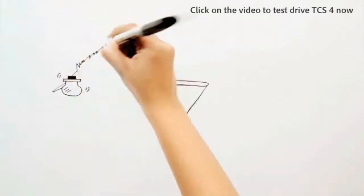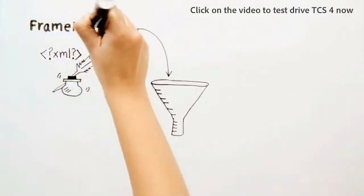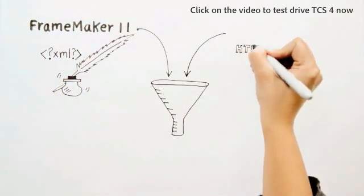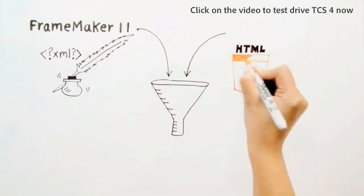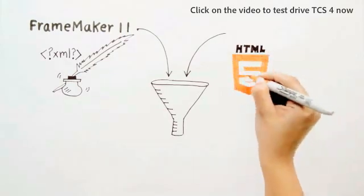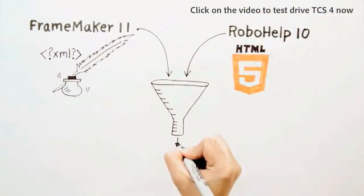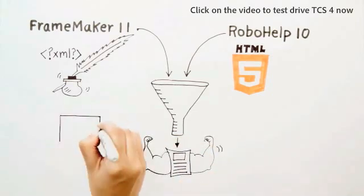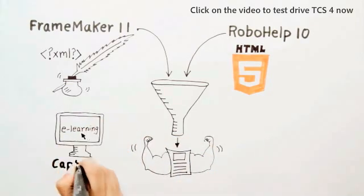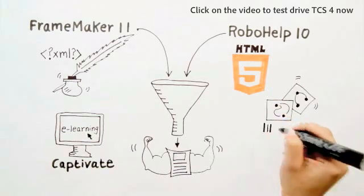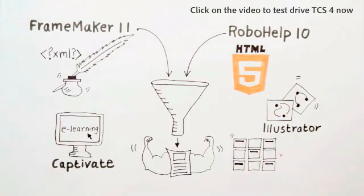Adobe Technical Communication Suite 4 combines the structured authoring prowess of FrameMaker 11 with the ubiquitous, multi-screen, HTML5 publishing capability of RoboHelp 10. And to add further muscle to your content, it integrates rapid e-learning content from Captivate, graphics from Illustrator, and slideware from Presenter.